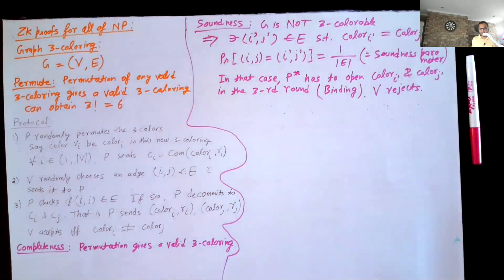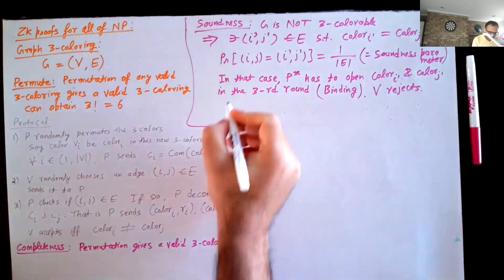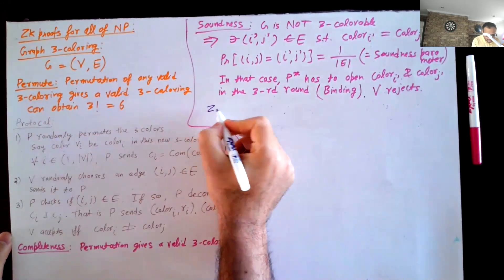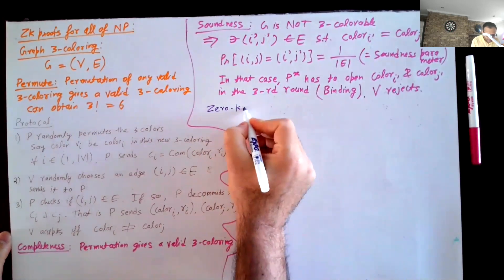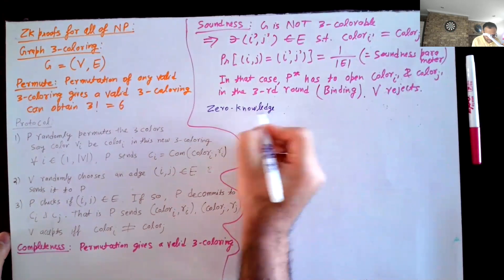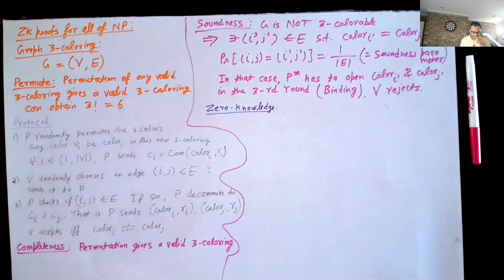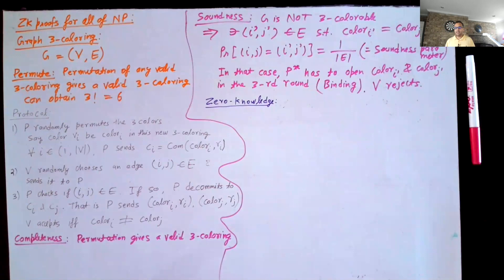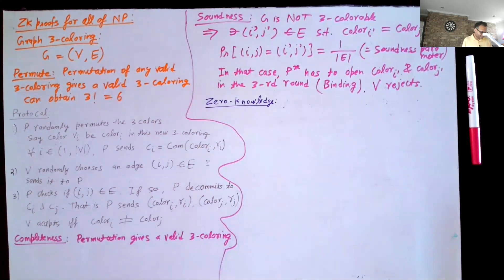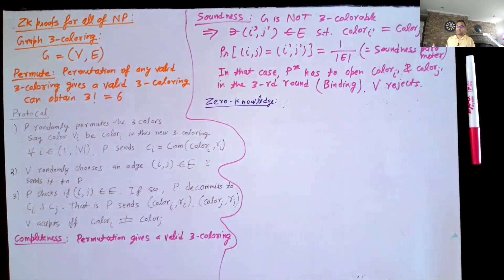Now finally we will see the zero-knowledge property, which is of course the most interesting. In zero-knowledge, we consider a simulator which has no idea what the witness is — what a valid three-coloring is. The simulator will try many times, and intuitively you can already see that: I try several times and hopefully the verifier will choose some edge on which I'd put different colors.